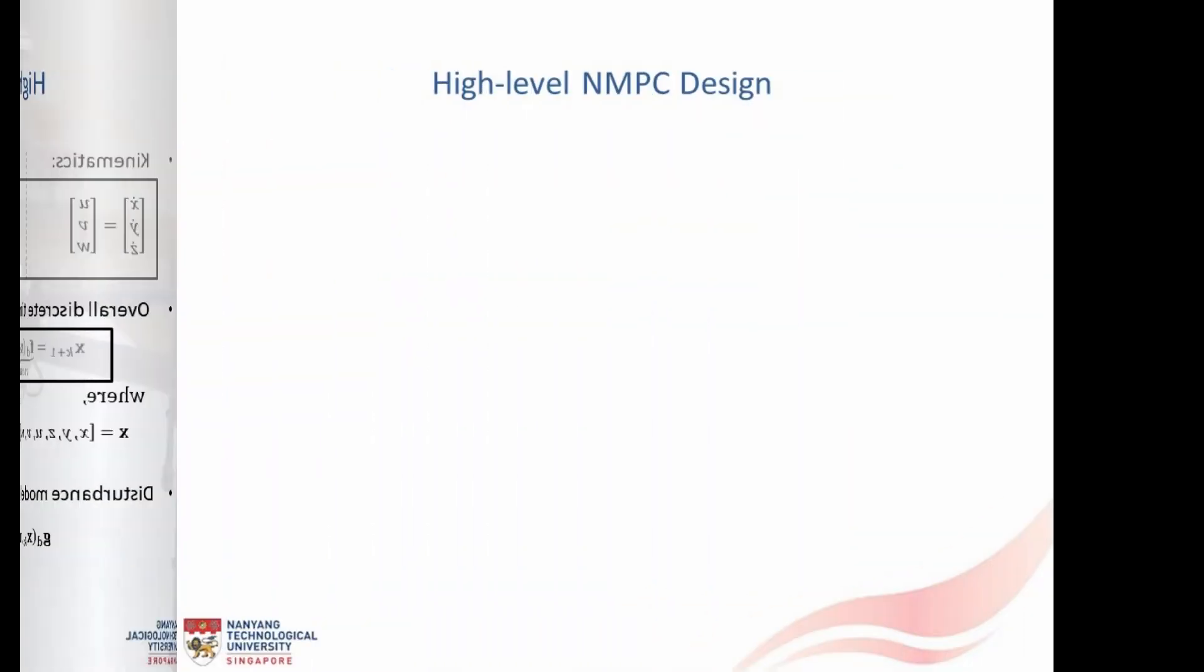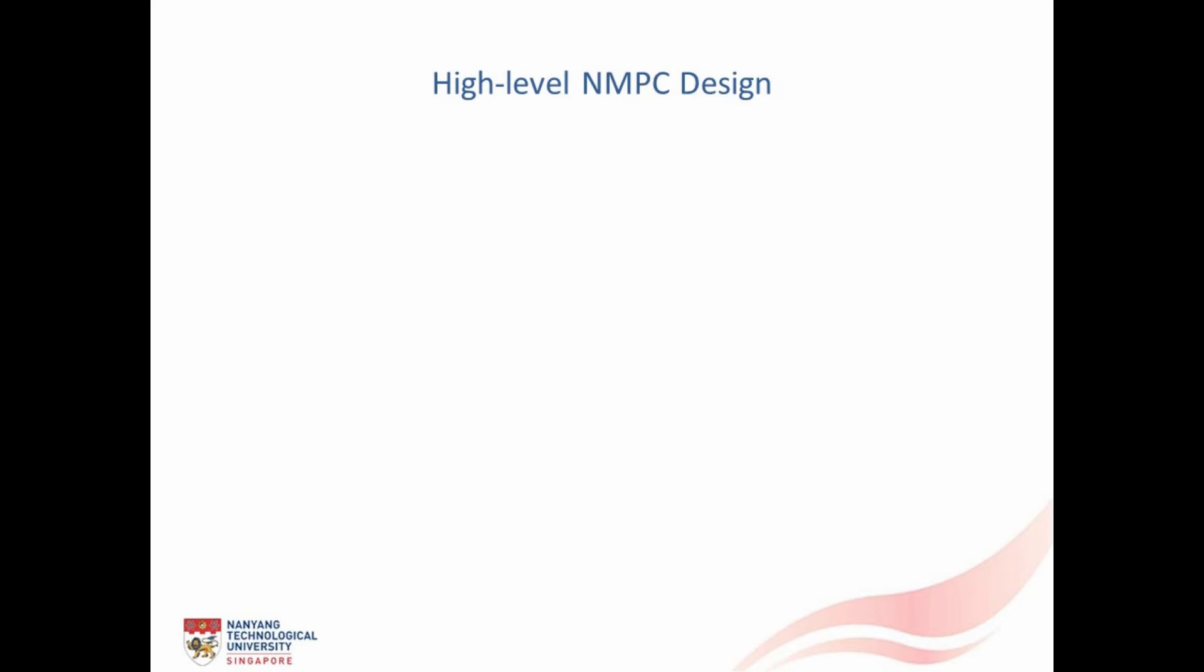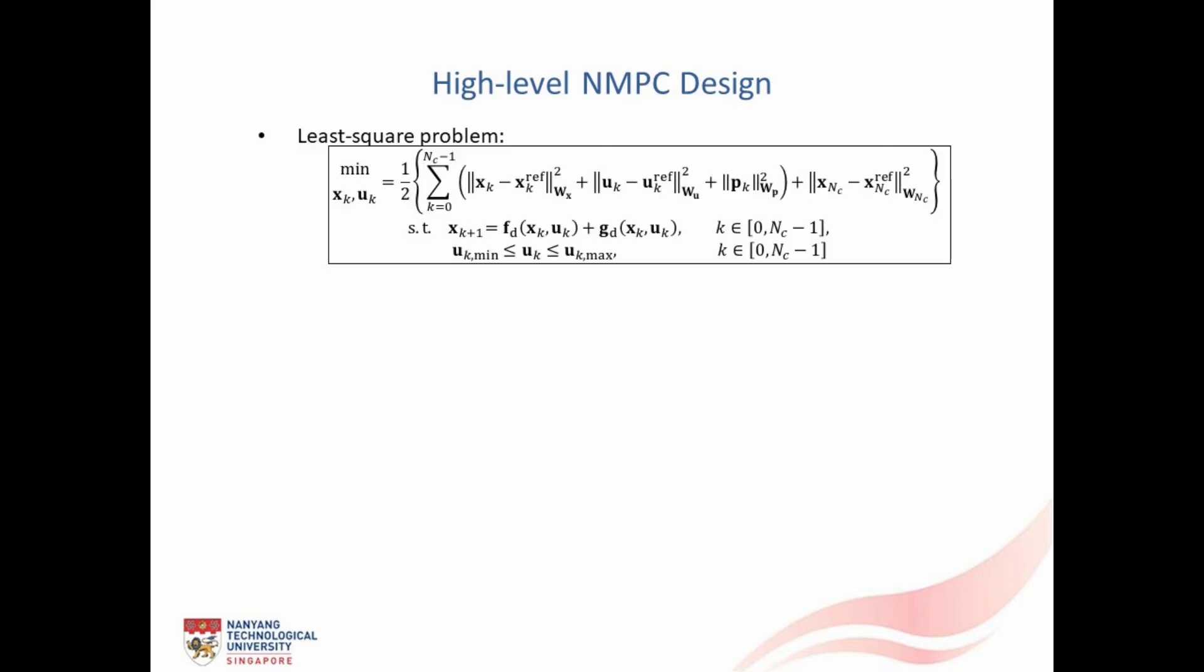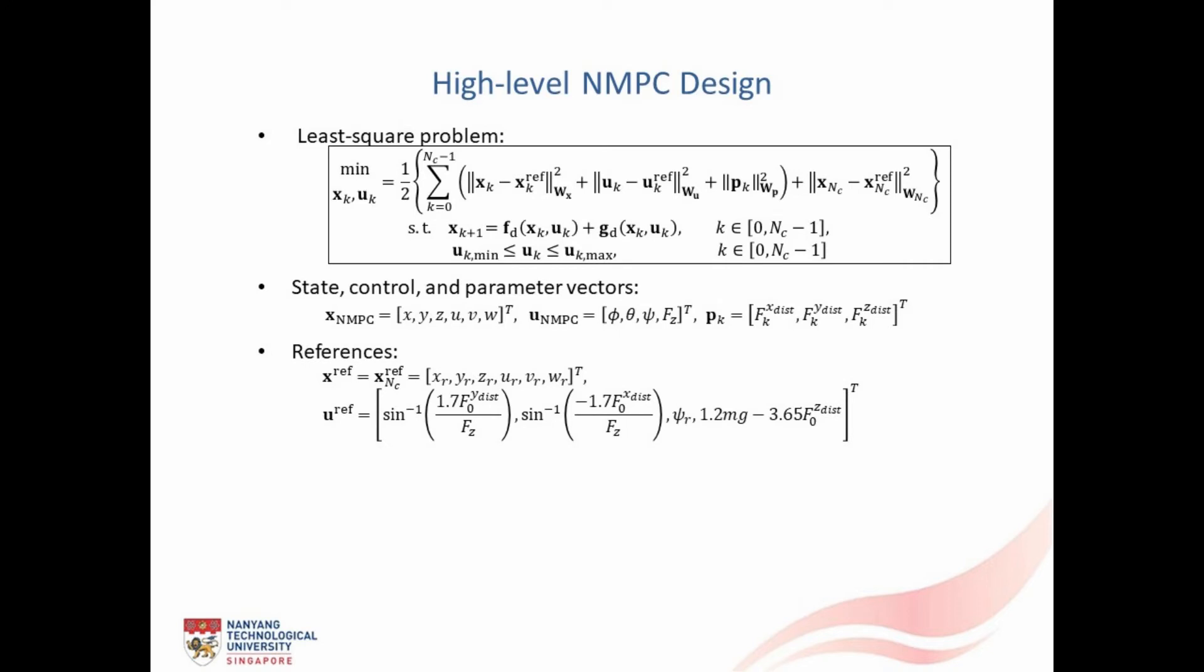Next, I present the design of the high-level NMPC. For tracking the given position trajectory, the high-level NMPC is designed utilizing a least-square problem formulation wherein the state, control and parameter vectors are taken like this. Also, these are the utilized state and control reference trajectories, control constraints and utilized weight matrices. Furthermore, we have selected the prediction window size as 30.